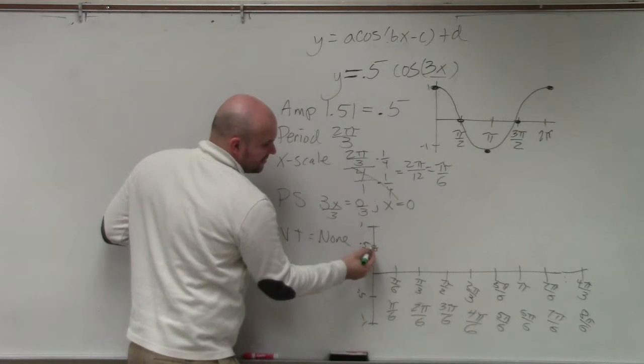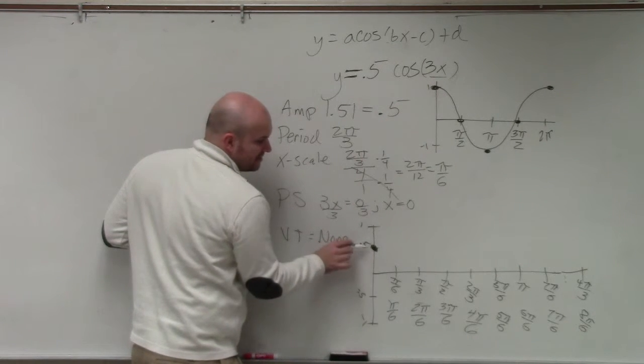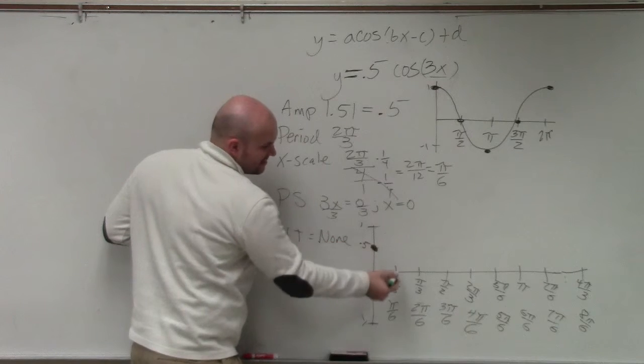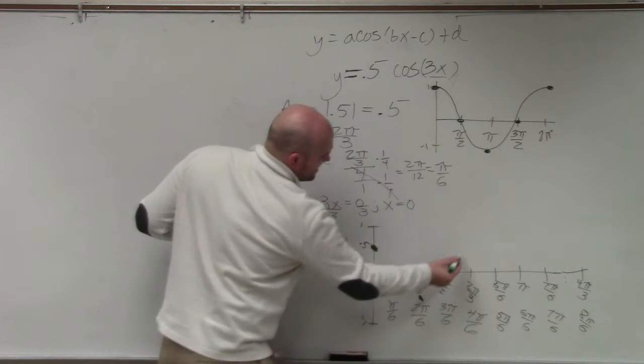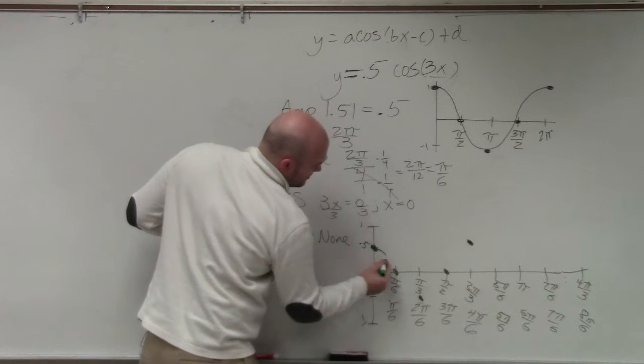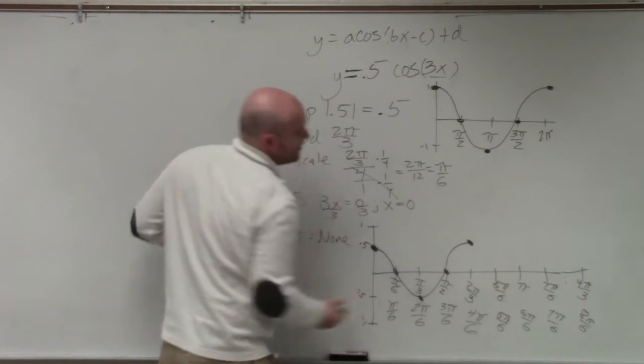So now, we're just going to copy this graph. The first point for cosine on the initial period was the max. Then it went to the minimum. I'm sorry, intercept, minimum, intercept, max. And then we just got to repeat it.